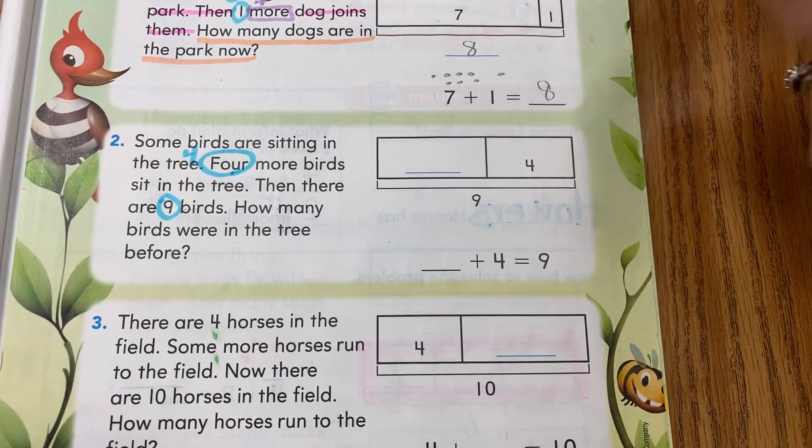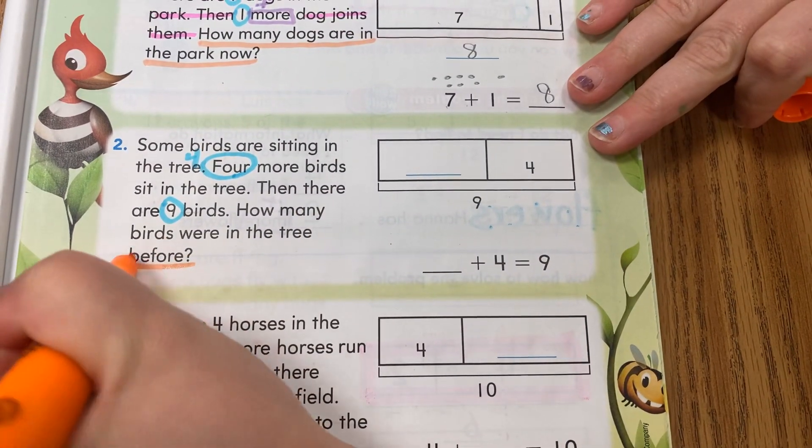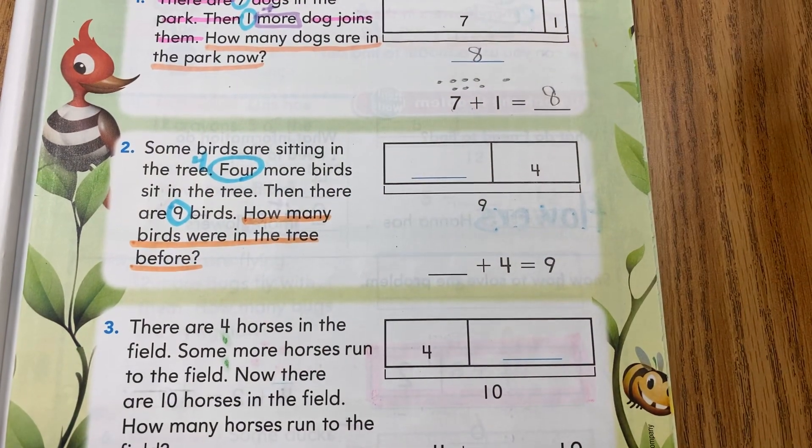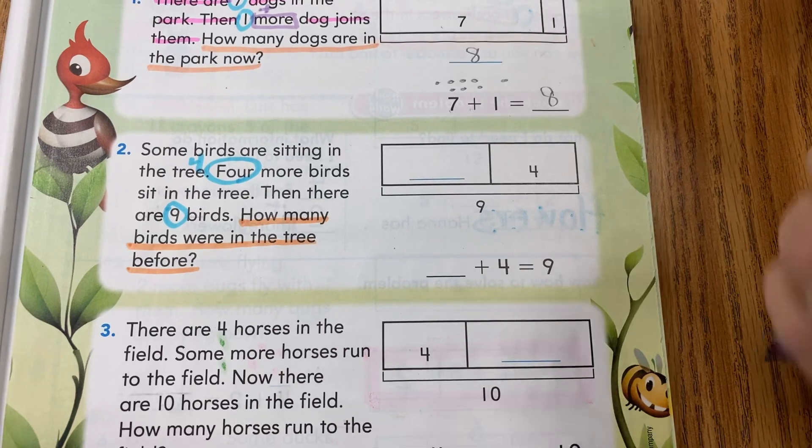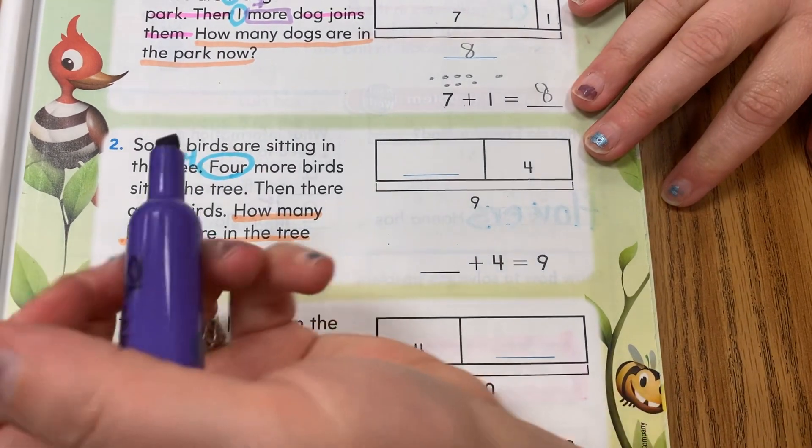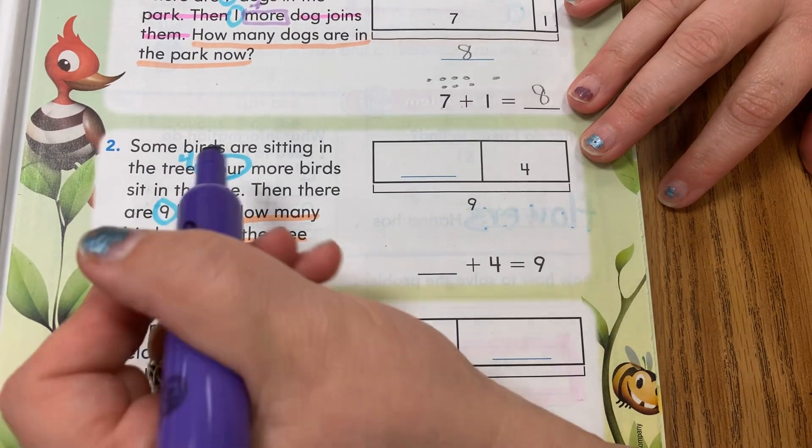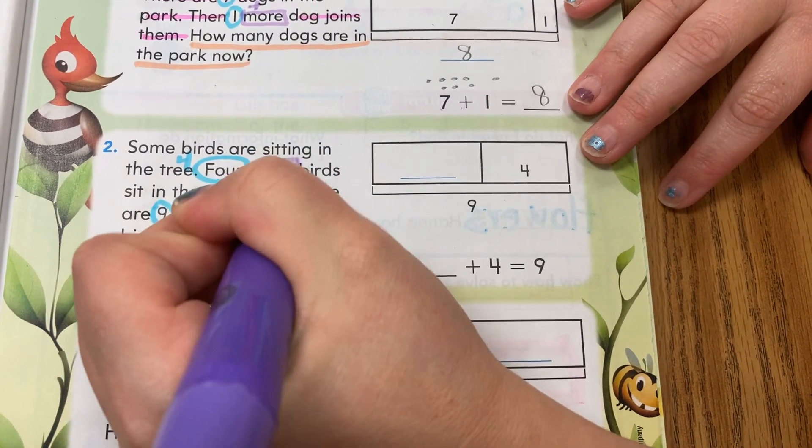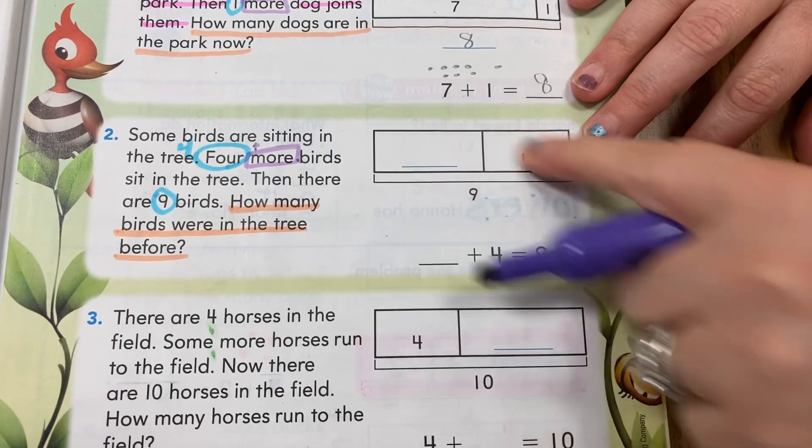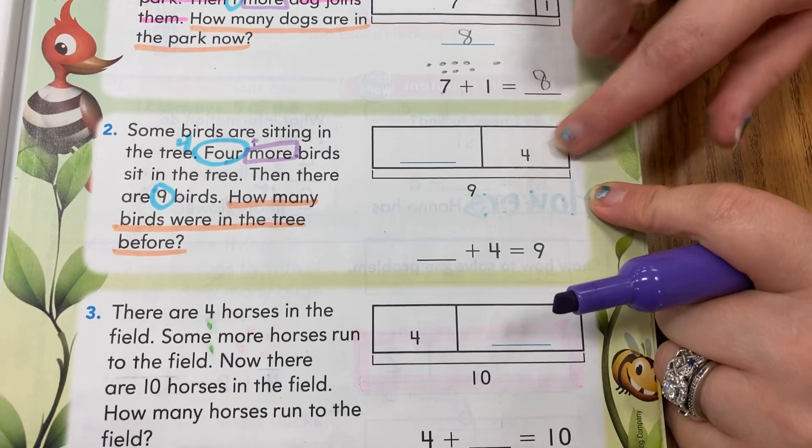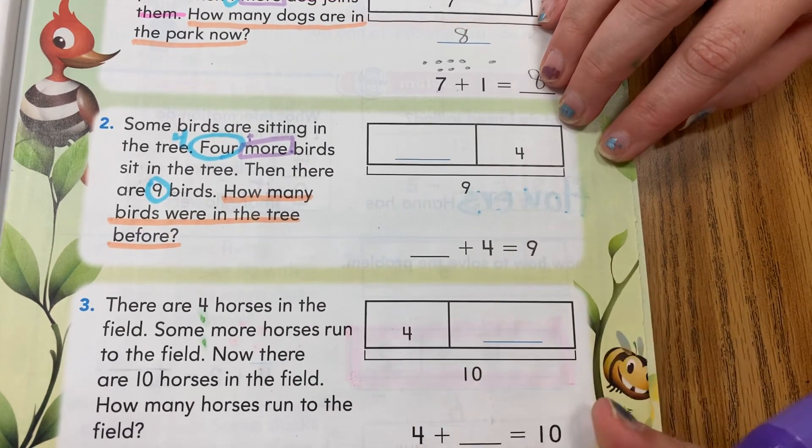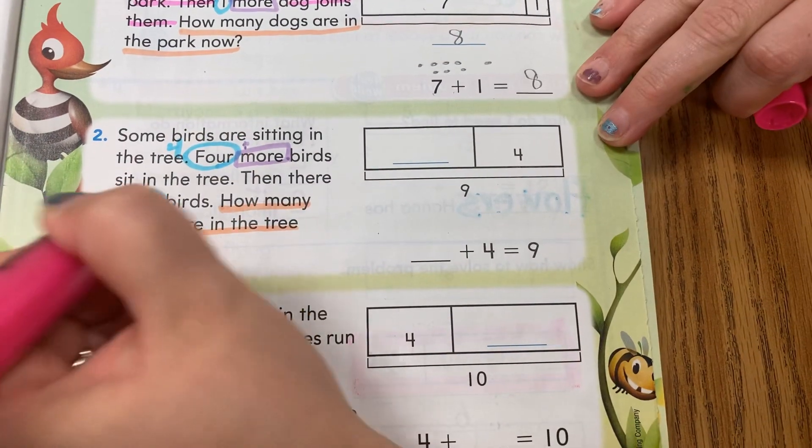So we have to be careful and look at those words. They want to know how many birds were in the tree before—question mark back to period. Four more birds sit in the tree. There were some birds already. So again, 'more,' so they're doing that addition. But if we look here, it's missing a piece. So we're going to really count on. Get rid of your junk.